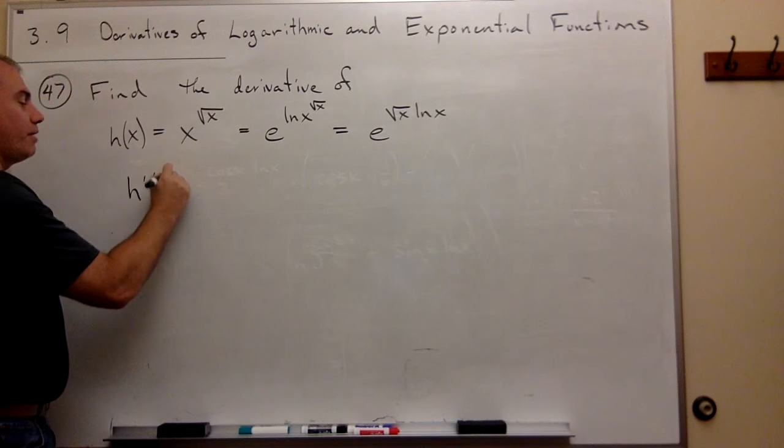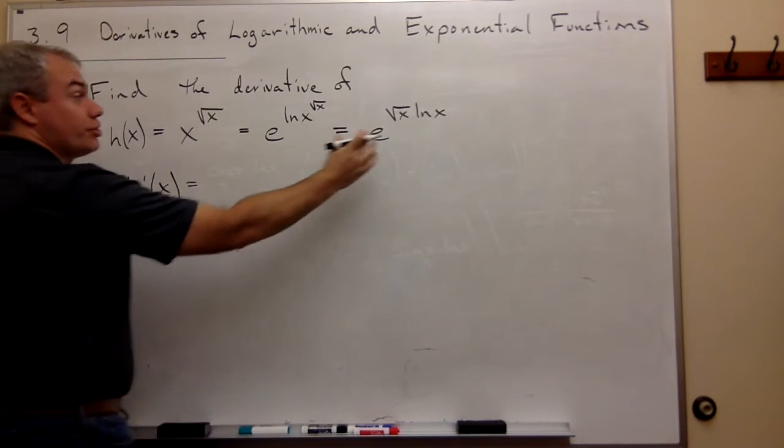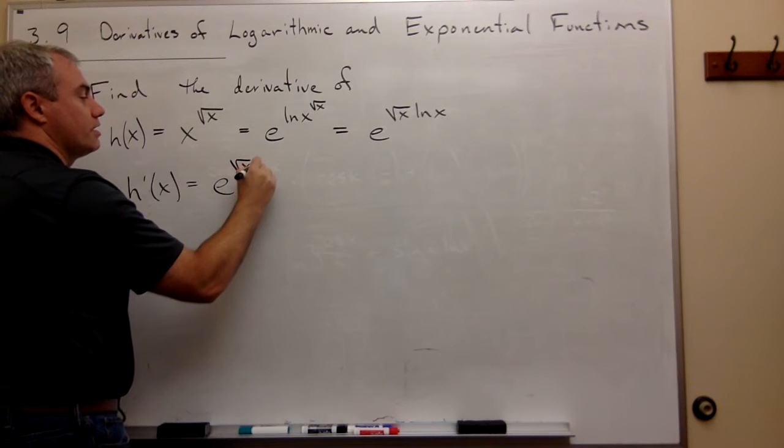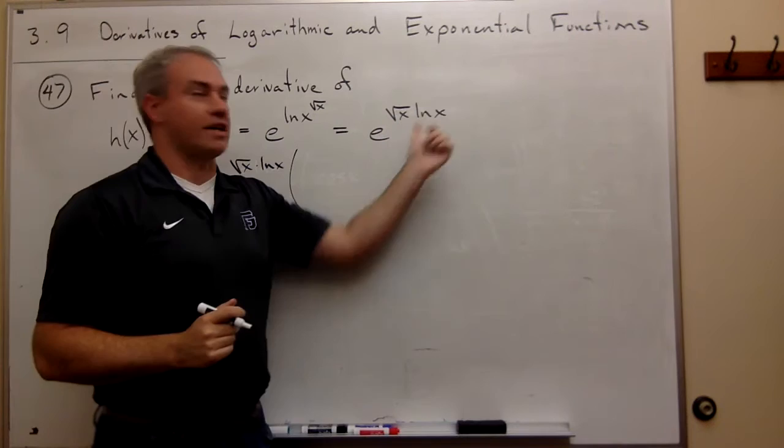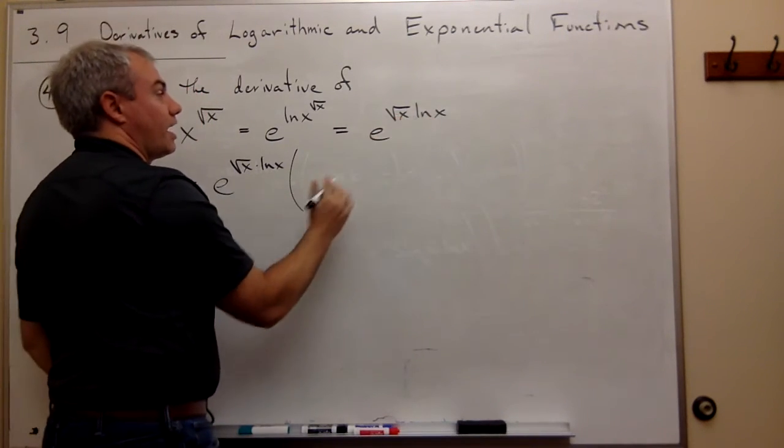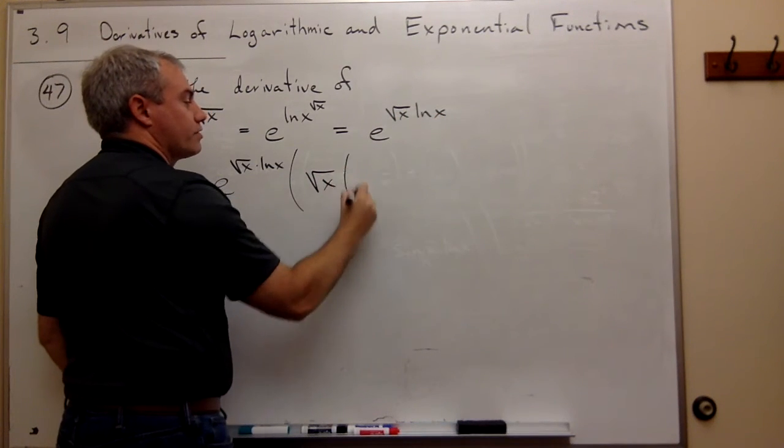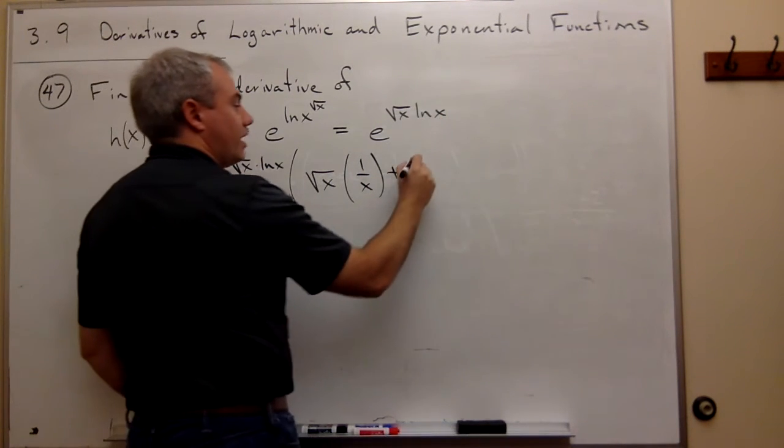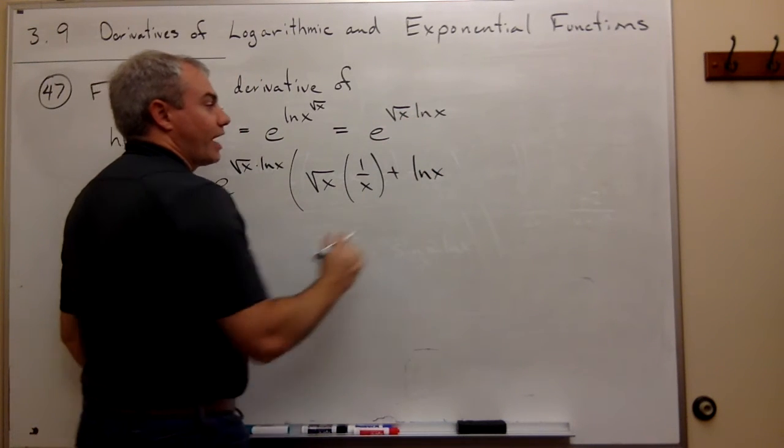So I say h prime of x equals e to the square root of x times ln of x, times the derivative of square root of x ln of x. But the derivative of square root of x ln of x is the first guy, square root of x, times the derivative of ln of x, which is 1 over x, plus the second guy, which is ln of x, times the derivative of square root of x.